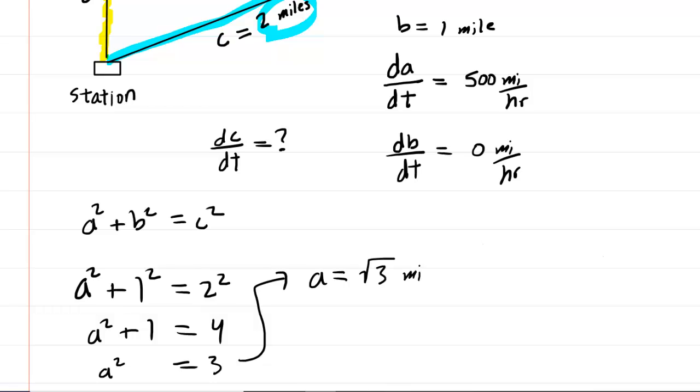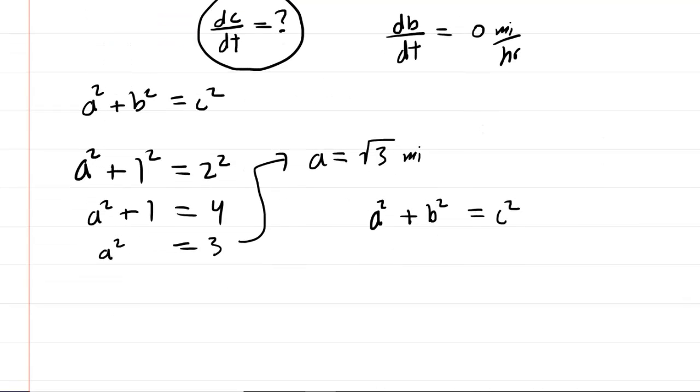So the final stage of the problem is to somehow create an equation that allows us to find dc/dt. Let's go back to the Pythagorean theorem. What we're going to do is differentiate each of the three terms with respect to time. We just have to do so following the chain rule. So, for instance,